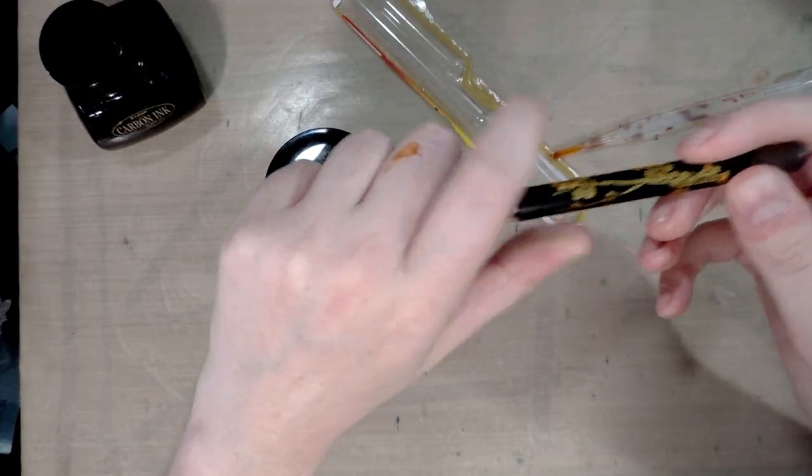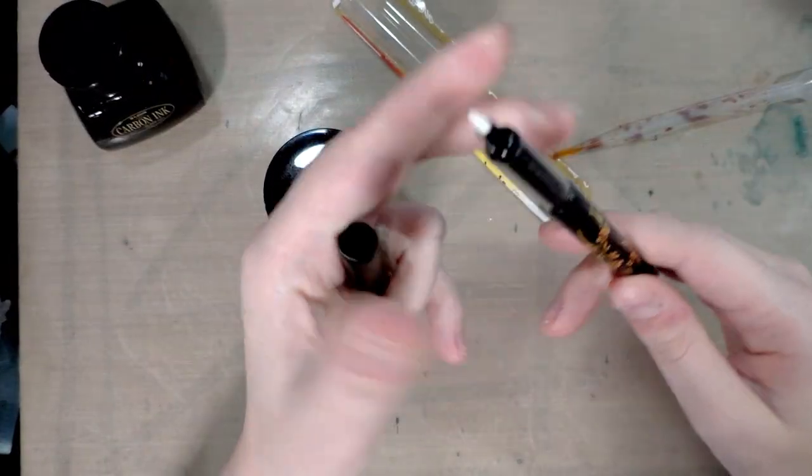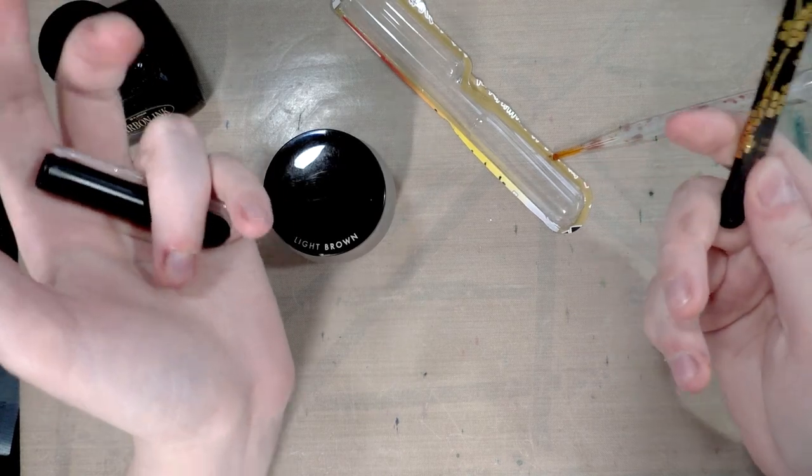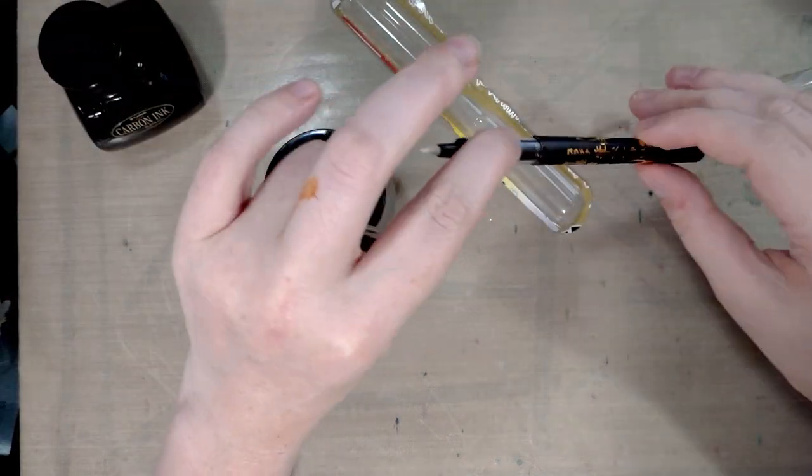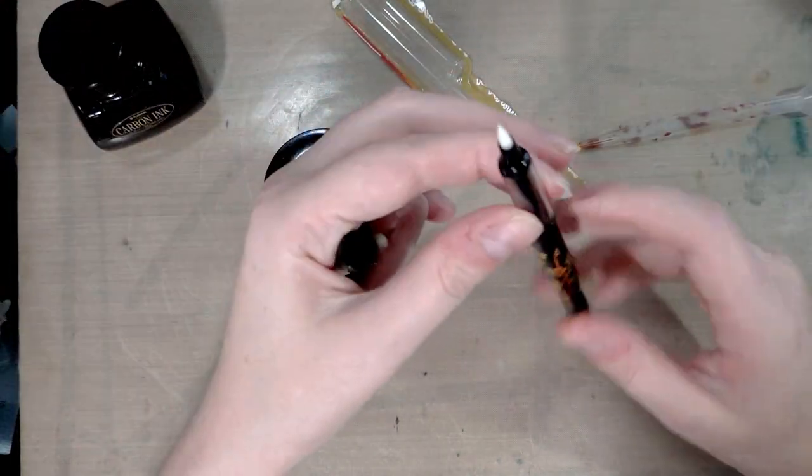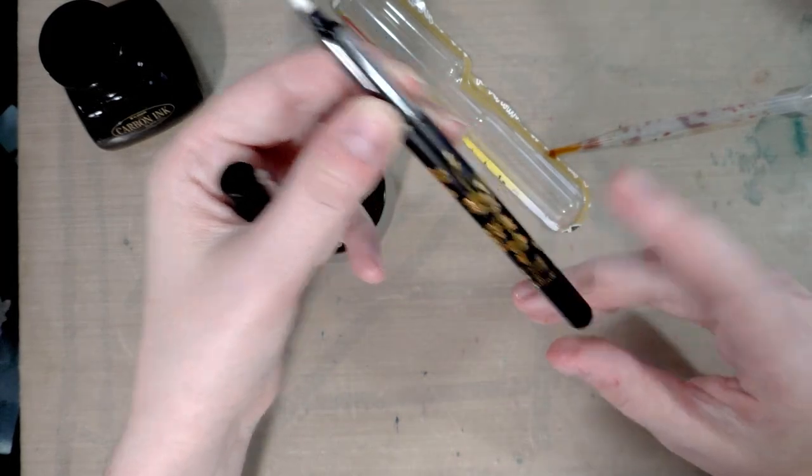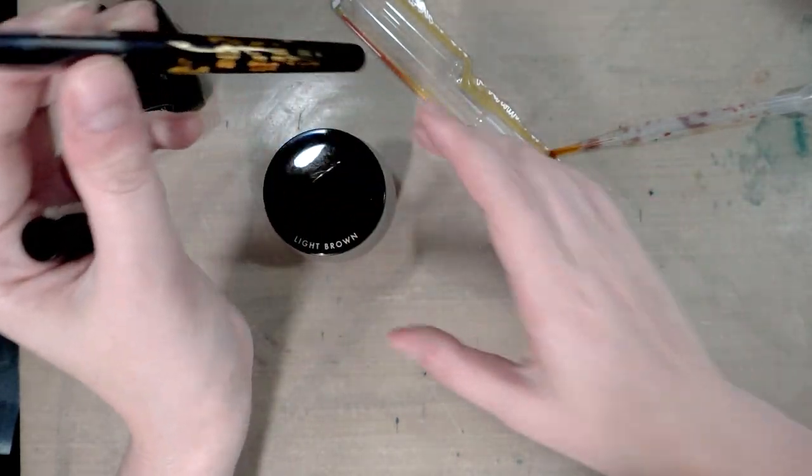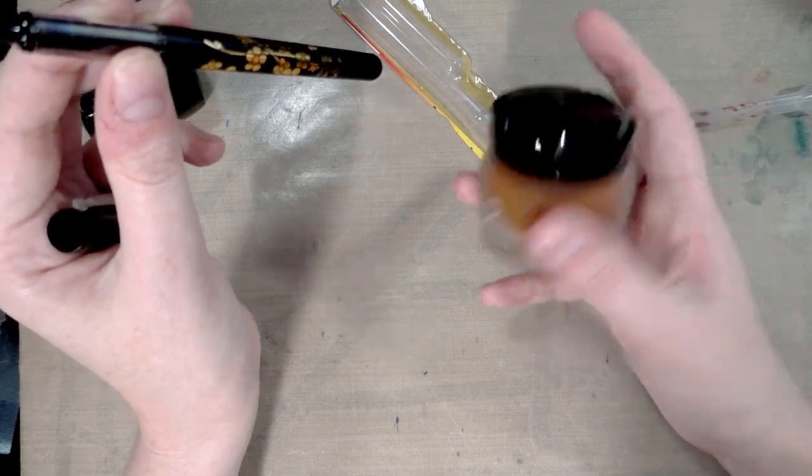All right. So unfortunately all that back and forth, I didn't catch what I just did on camera and I even narrated it. So what I did is I use this eyedropper to fill the barrel of this pen, avoiding the silicon grease with Sailor Storia ink.